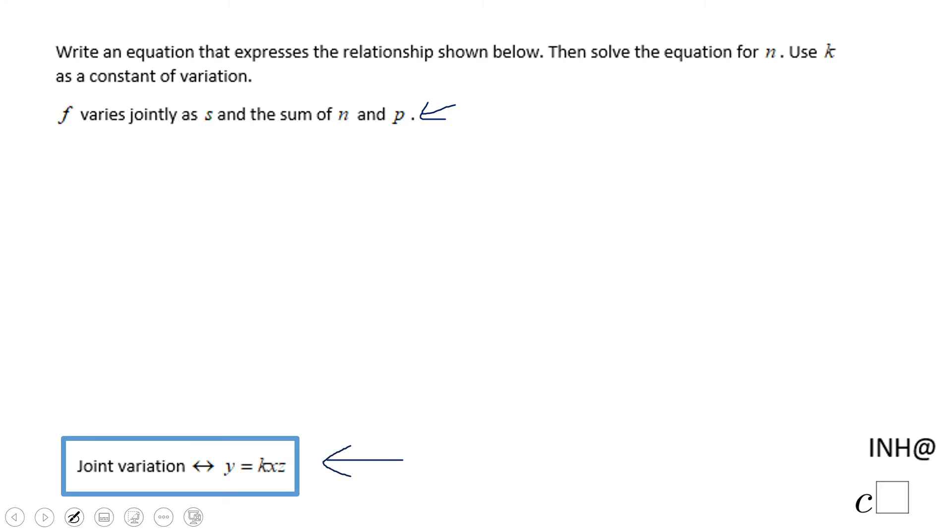Now we just need to be sure we translate this problem into an equation for our situation. So it's going to be F equals K, and now we need to look here jointly as S, so we should have an S here, and the sum of N and P.